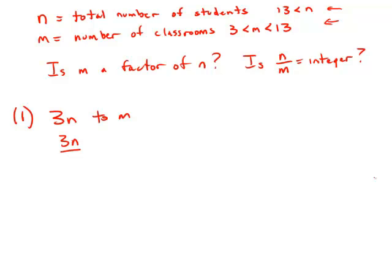So in other words, 3n divided by m is an integer. We're guaranteed of this.